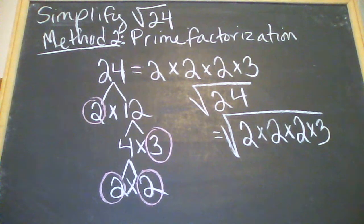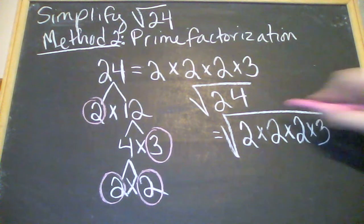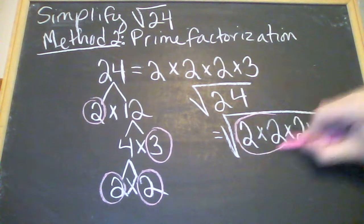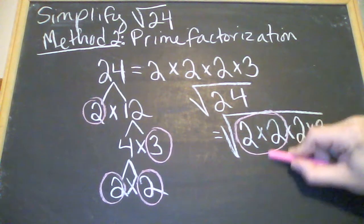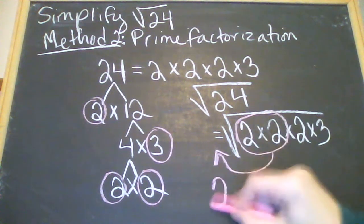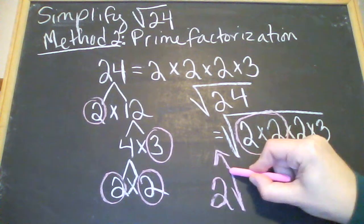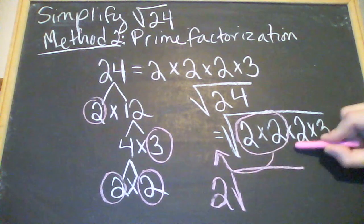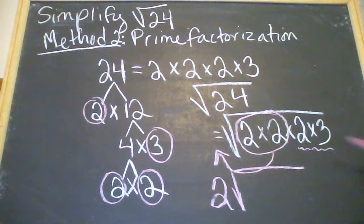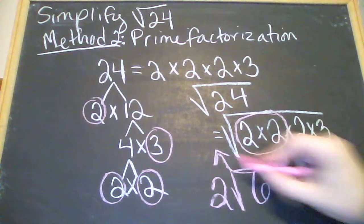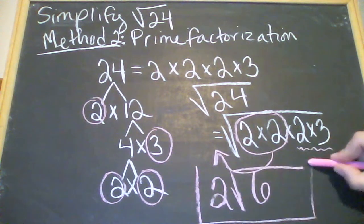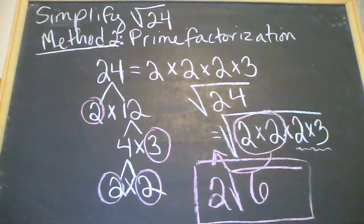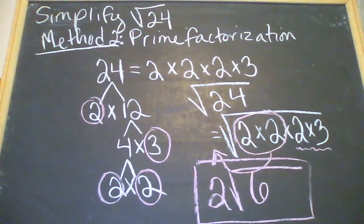Now we look at whether any of those prime factors repeat. The 2's repeat, so we can pull that 2 out in front, giving us 2 times the square root of something. The remaining 2 and 3 do not repeat, so we multiply: 2 times 3 is 6. So our answer is 2 times the square root of 6 — the same answer as when we listed out all the factors.